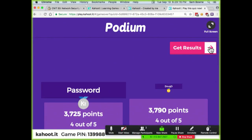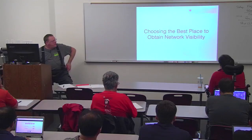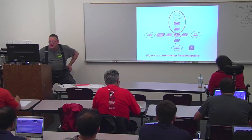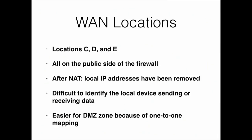The winners are Doug D, Password, and Groot. How are you going to choose the best place to obtain network visibility? You might try looking only at your internet traffic, figuring you only care about external attackers — that's options C, D, and E, all on the public side of the firewall after NAT, so all addresses should be public. But you're not going to be able to determine which local devices are sending or receiving data. If you have an infected device, you'll get a post-NAT address, and without extensive NAT logs you can't figure out which device did it.